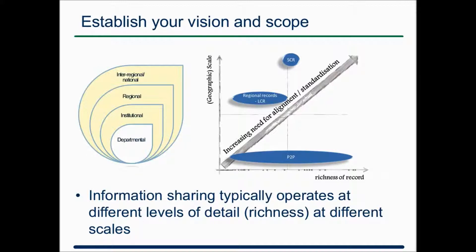A good starting point when thinking about interoperability is to consider the level and scope of sharing you're looking at. There's sharing within a department, within a hospital. When you scale up, there's sharing across all systems within an organisation — a PAS system and departmental systems all sharing patient information. Scale up wider, and you start talking about regional interoperability — things like the Leeds care record, with an ambition to share information across a whole region. You can go even wider to national flows, and that's where you look at things like the Summary Care Record.